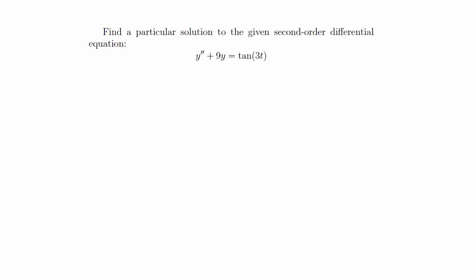In this video we're going to talk about the variation of parameters method to solve differential equations. The example is to find a particular solution to the given second order differential equation: y double prime plus 9y equals tangent 3t. Since the function on the right hand side is not sine or cosine, you can't use the integrating factor method and you have to use variation of parameters instead. The first thing we do is solve for the homogeneous equation.